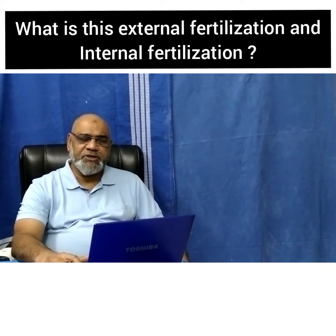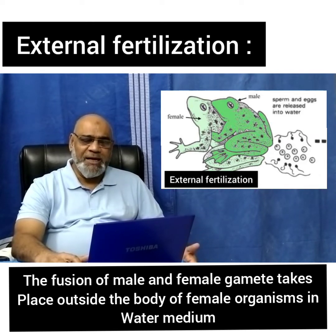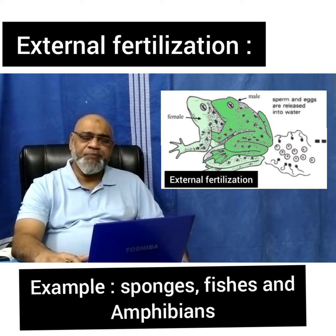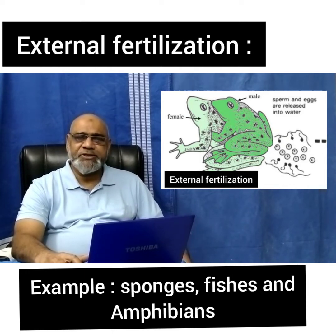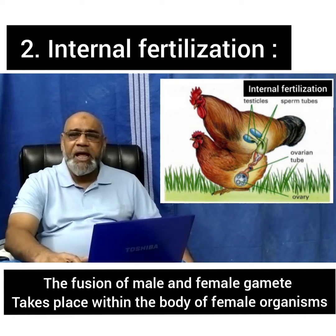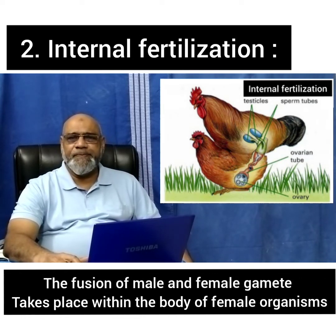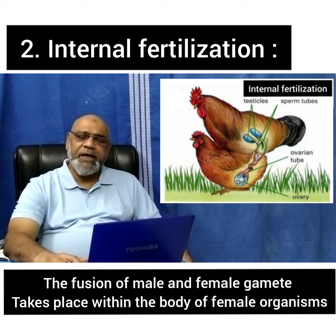What is external fertilization? The fusion of the male and the female gametes which takes place outside the female organism — for example, in the water medium, as it occurs in sponges, fishes, and amphibians. What is internal fertilization? The fusion of the male and the female gametes that occurs within the body of the female organism.